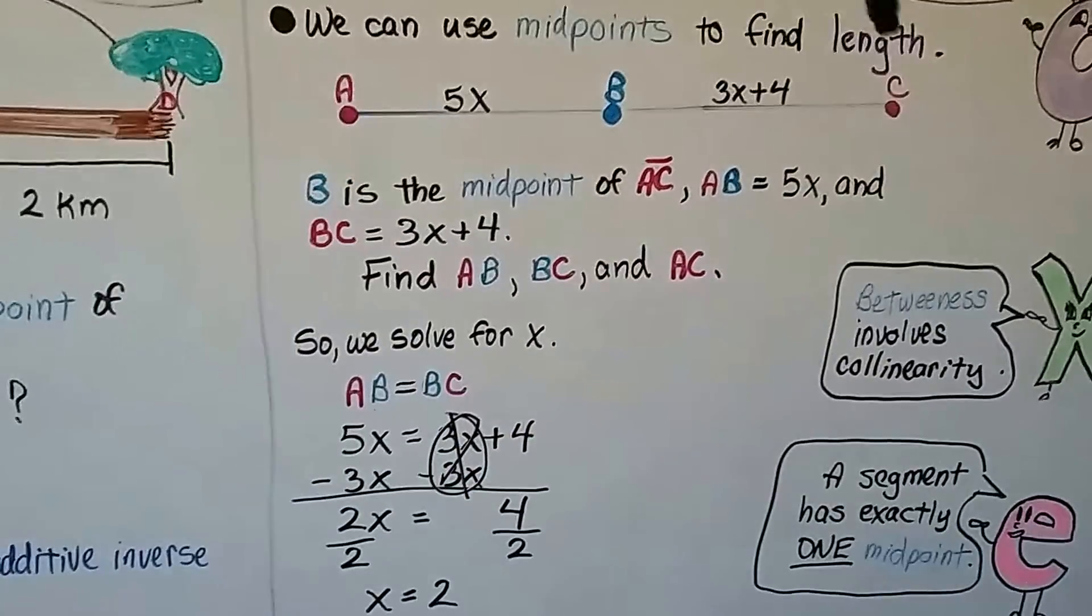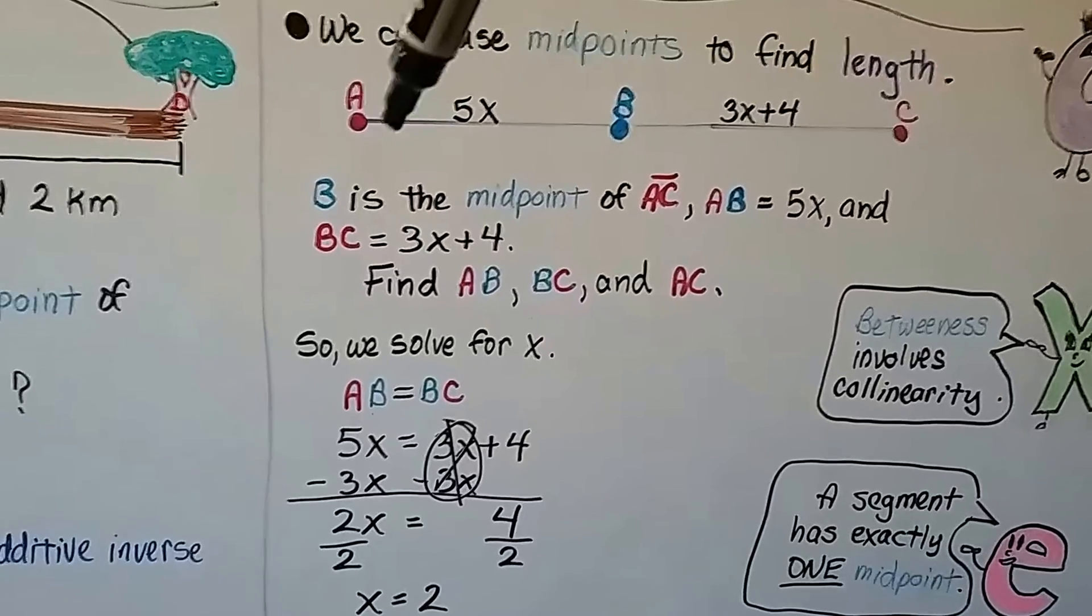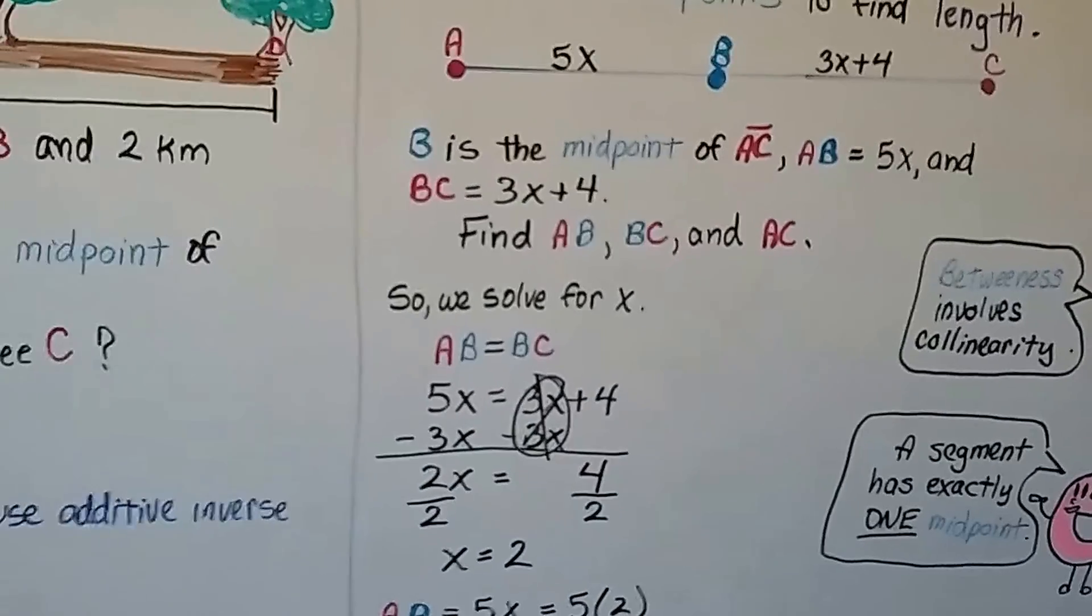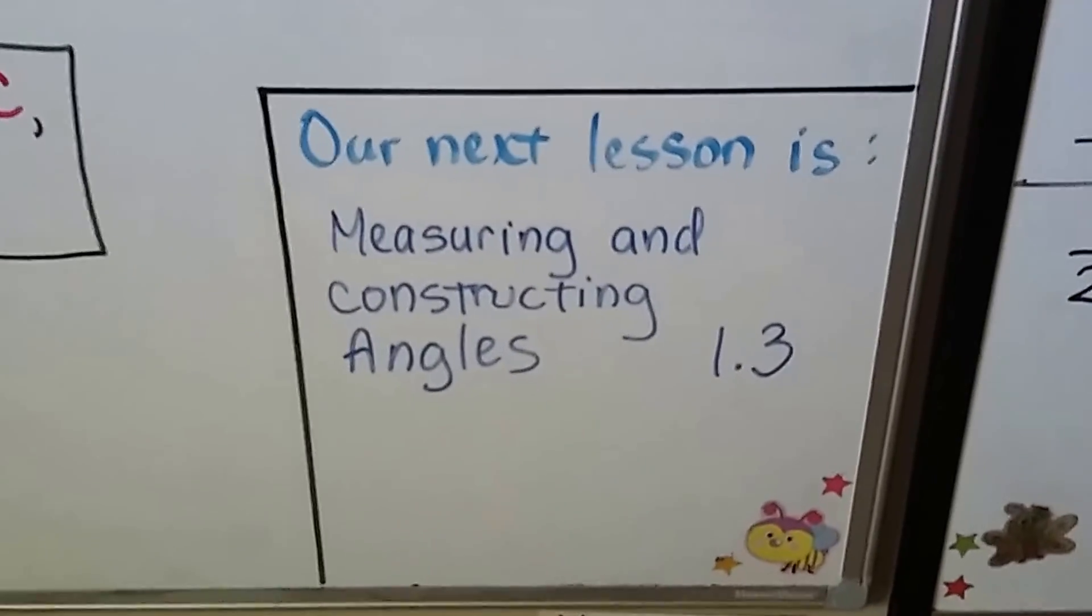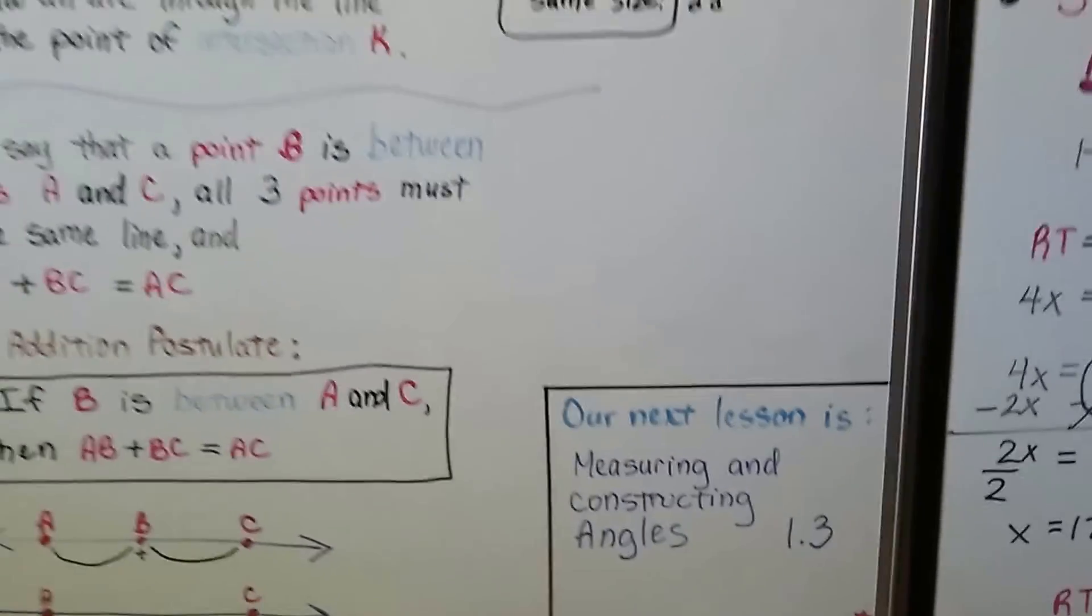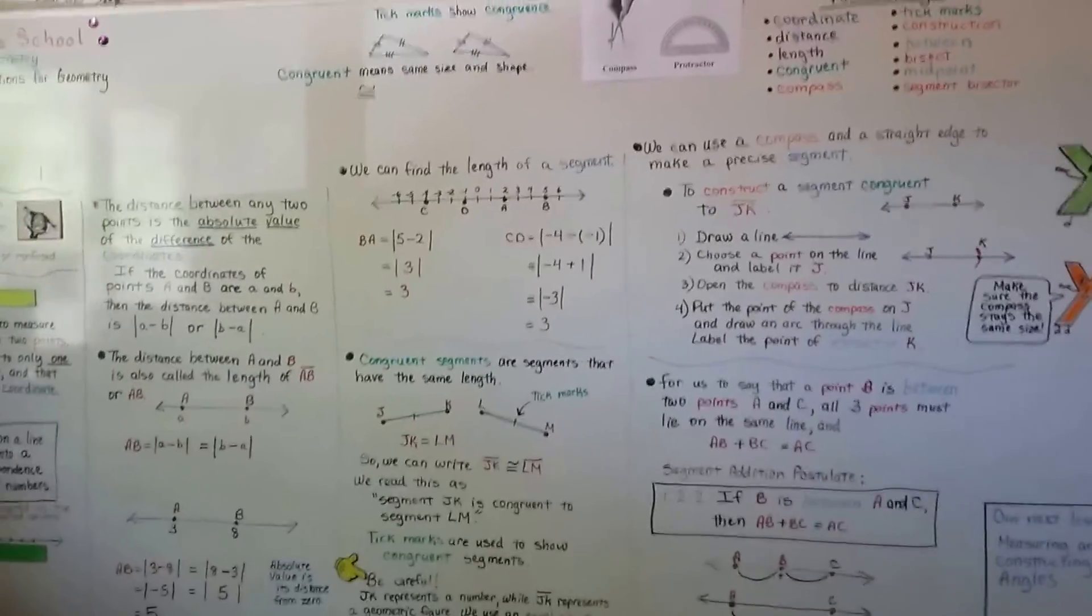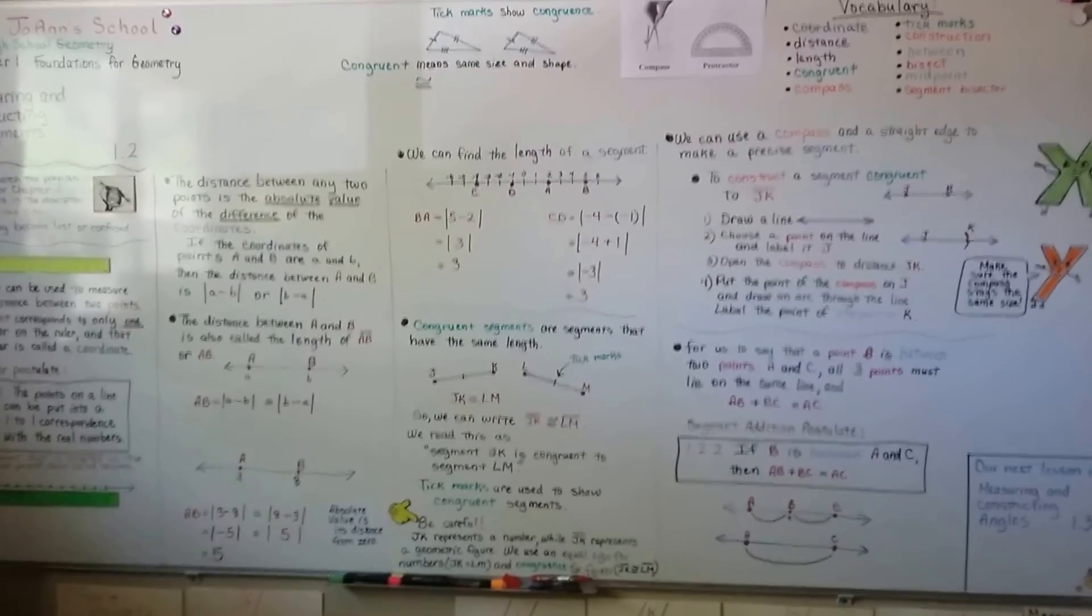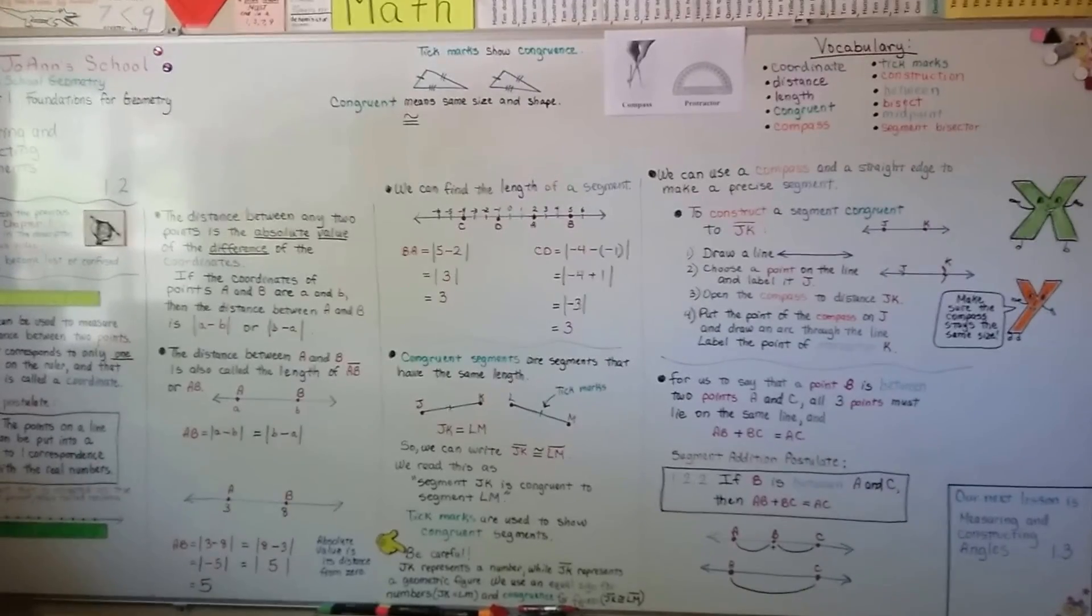Remember that betweenness means collinearity. So if B is the midpoint, it's in between A and C. That means it has to be on the same line, the collinear. And a segment has exactly one midpoint. It's only got one dead center, doesn't it? So, our next lesson is measuring and constructing angles. I'm going to be using our compass more. That's lesson 1.3. And I hope you're doing well. It's really important that you have a journal or a spiral to write down these postulates, axioms, and the upcoming theorems, because we are going to be doing proofs. And we need these at our fingertips so we can use them as our proof of a statement we make. So try to write those down if you can. And I'll see you next time. Bye!